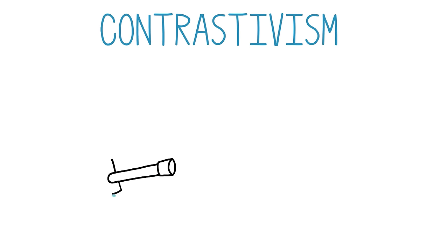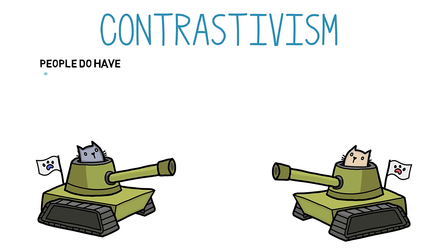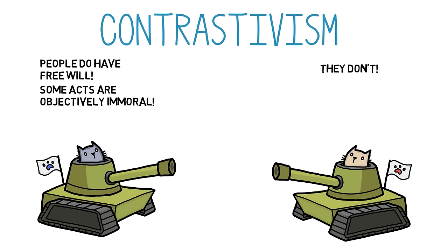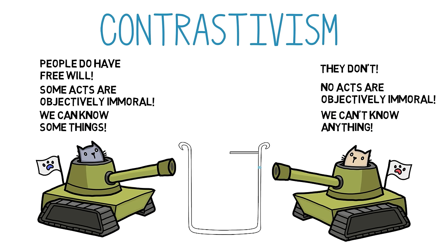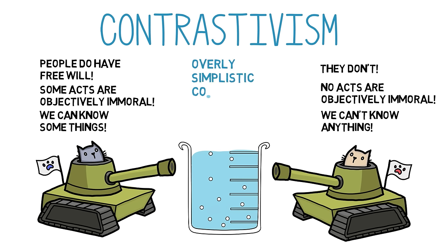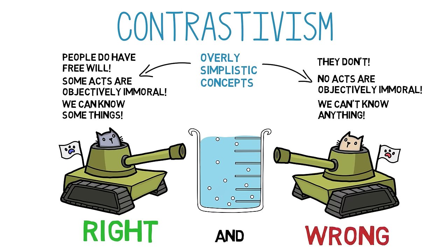Many movements in philosophy argue for one side or the other of traditional philosophical issues. They argue that people do have free will, or that they don't. They argue that some acts are objectively immoral, or that no acts are objectively immoral. They argue that we can know something, or that we cannot know anything. The goal of contrastivism is different. Instead of solving traditional issues, contrastivists dissolve old debates by showing how these disputes depend on overly simplistic concepts. They propose a new way to understand the crucial concepts, so that both sides in the old debate are right and both are wrong. They want to have their cake and eat it too, when their opponents say that this is impossible.